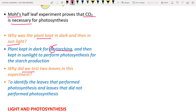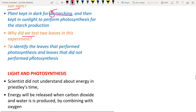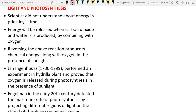Light and photosynthesis: scientists proposed that energy is released during cellular respiration — C6H12O6 + O2 → CO2 + H2O + energy. This reaction is the reverse of photosynthesis, which uses CO2 and H2O with sunlight and chlorophyll to produce glucose.